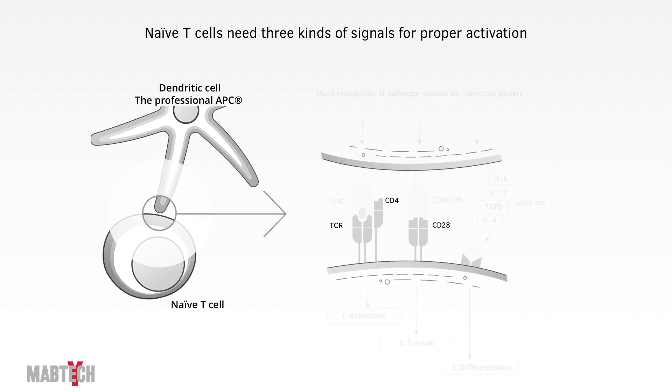If there is no pathogen-associated molecular patterns present, if there's no danger signals, the dendritic cell keeps these three signals down low.